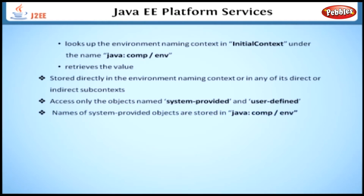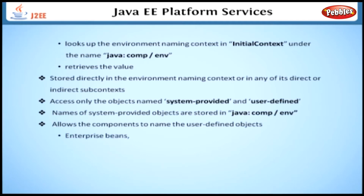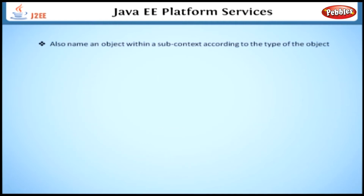The names of system-provided objects are stored in the environment naming context java:comp/env. It also allows the components to name user-defined objects, such as enterprise beans, environment entries, JDBC data source objects, etc. We can also name an object within a subcontext of the naming environment according to the type of the object — for example, enterprise beans are named within a subcontext like this.